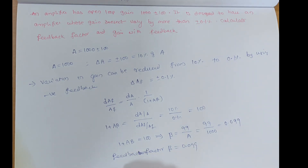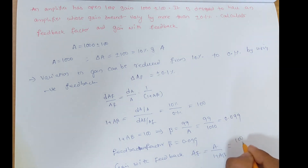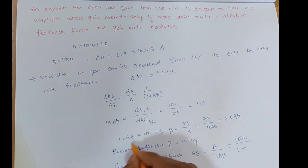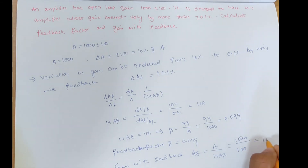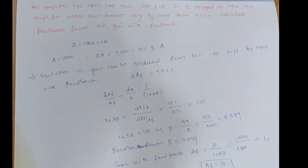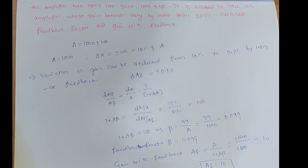Gain with feedback: AF = A ÷ (1 + Aβ) = 1000 ÷ 100 = 10. So the feedback amplifier gain is 10. In this way we can solve problems on multistage amplifiers and feedback amplifiers. Thank you.